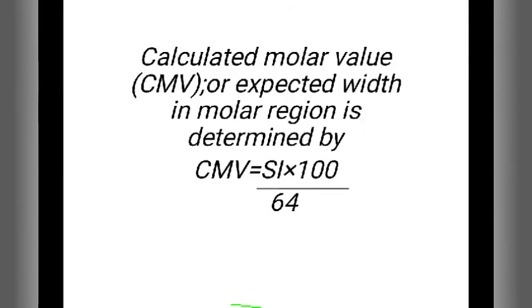The calculated molar value, or CMV, represents the expected width in molar region. CMV equals SI times 100 divided by 64 for molar region.